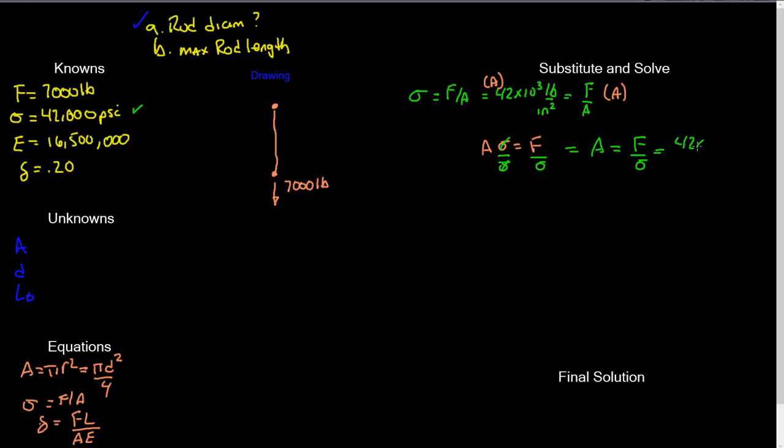Filling these numbers in. Let's see, that equals to my force, which is 7,000 pounds, divided by 42 times 10 to the third pounds per inch squared. Now you'll see that these units cancel out. My pounds cancel out. And what I'm left with is inch squared.